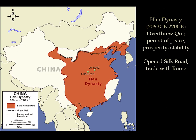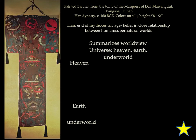Next, we have the Han Dynasty, which represents a period of peace, prosperity, and stability. Great economic prosperity can be found in this period because of the exchange of ideas. The Han Dynasty represents an end of the mythocentric age — the belief in a close relationship between humans and the supernatural world. The worldview of the Chinese at this time includes heaven, earth, and the underworld. The universe is divided: heaven is at the top, then the earth below, and the underworld below it. The greatest section is given to heaven itself.